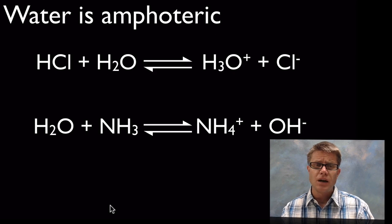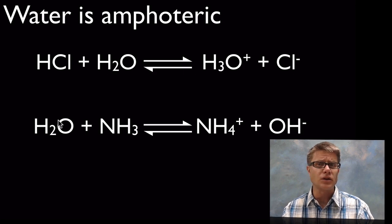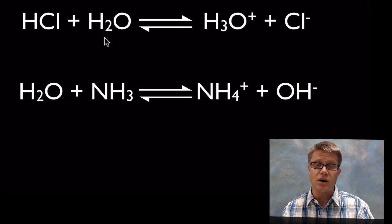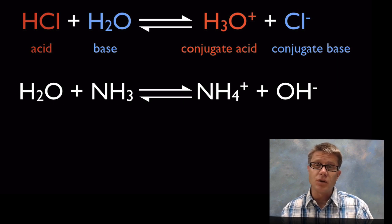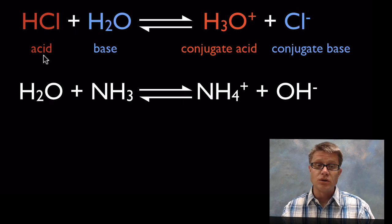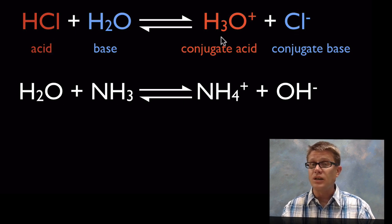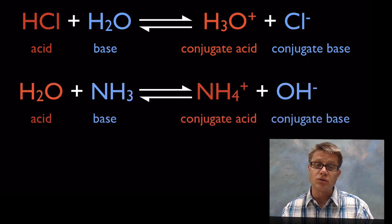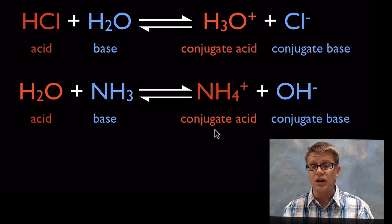Water can serve as both an acid and a base — take a moment to figure out whether water is an acid or a base in each reaction. An acid is something that donates a proton, and a base is something that receives it. In the first reaction with hydrochloric acid and water, the acid is hydrochloric acid and the base is the water — water is receiving that proton. We lose the proton from HCl, making a conjugate base chloride, and the water gains that proton, making a conjugate acid. In the reaction with ammonia and water, water serves as the acid because it donates the proton to ammonia, creating a conjugate acid and a conjugate base.